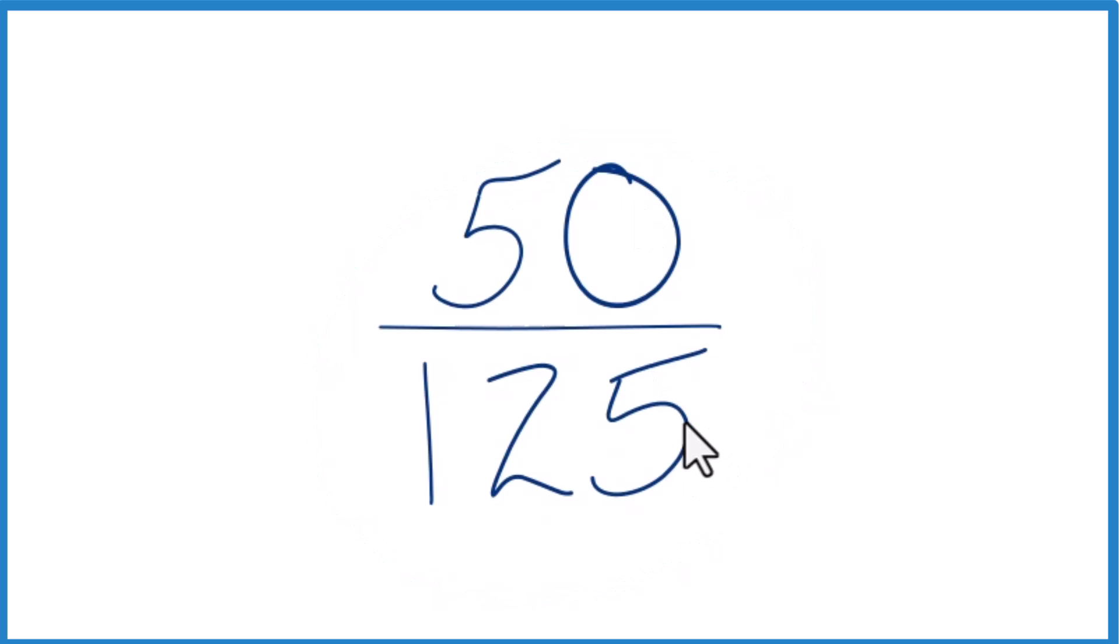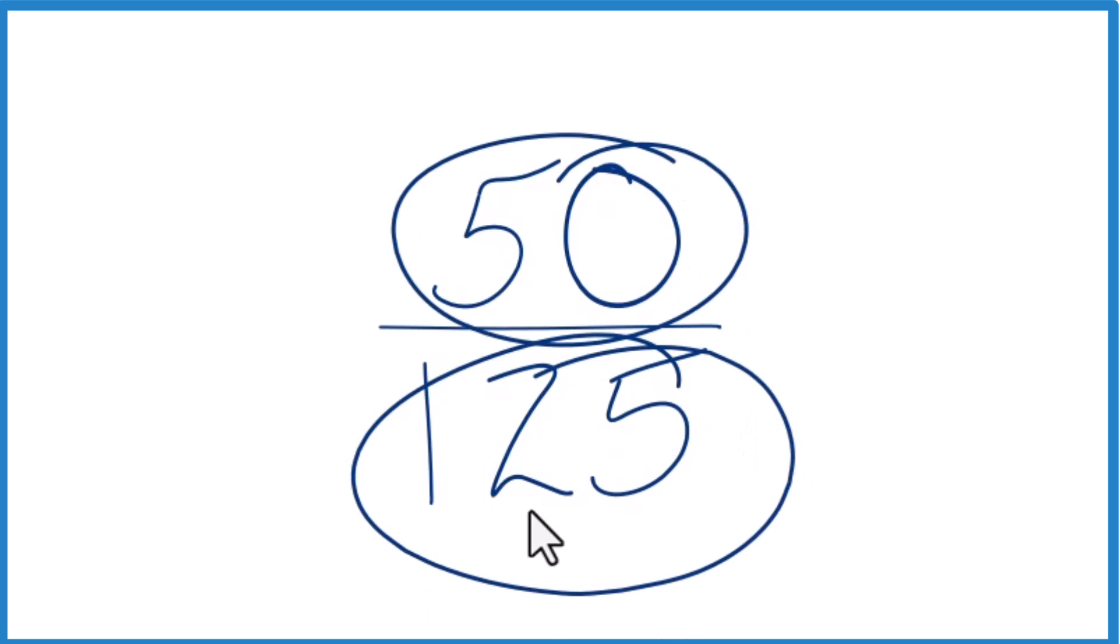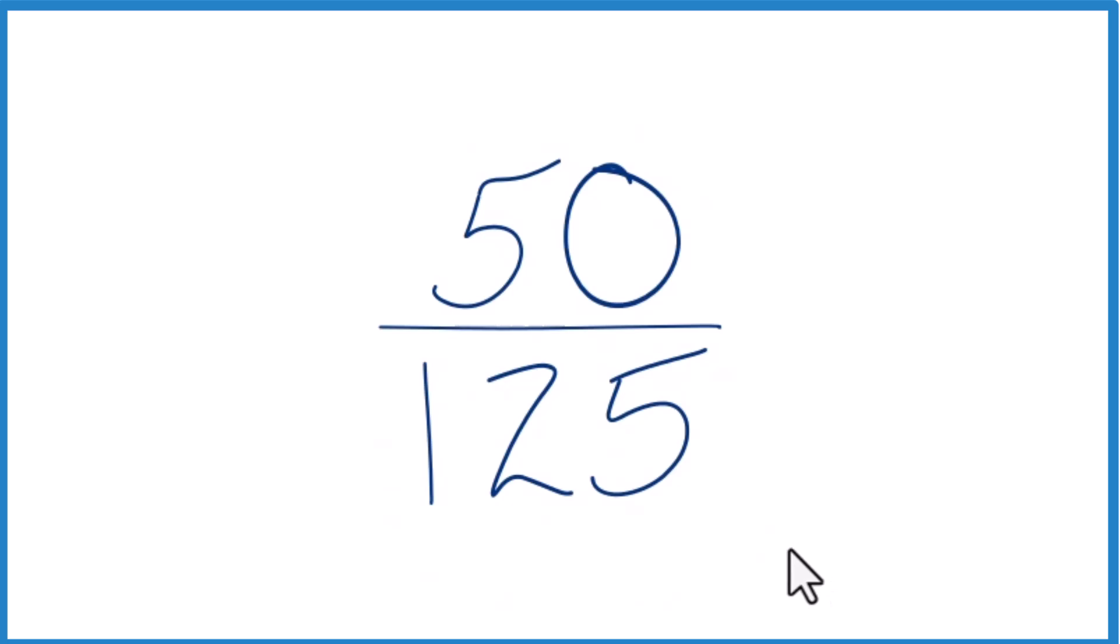What we want to do is end up with another fraction that is equal to 50 divided by 125. It's just that we've simplified or reduced that fraction down to lowest terms.